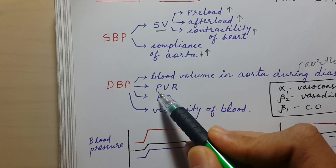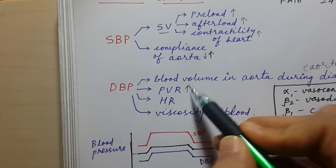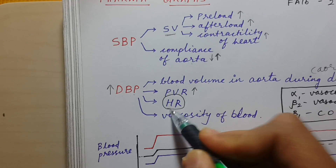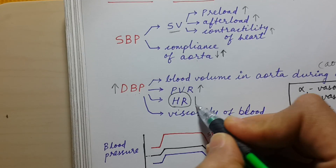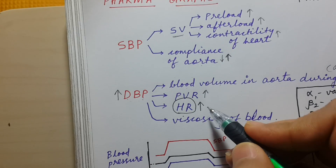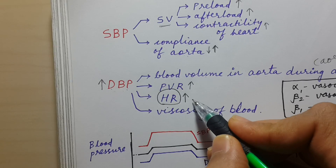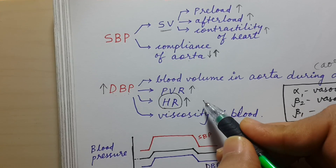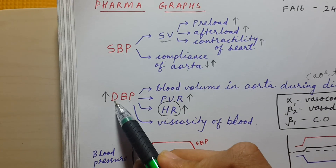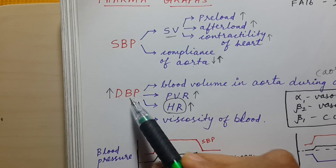Another important component is peripheral vascular resistance — if it increases, diastolic blood pressure increases. Whenever heart rate increases, diastolic blood pressure also increases, because coronary artery filling decreases and more blood remains in the aorta. Also, when blood viscosity increases, diastolic blood pressure increases.